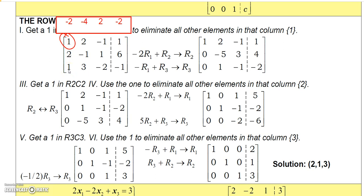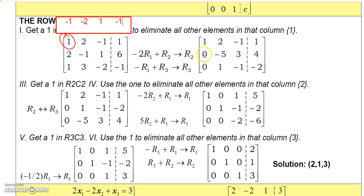Now I also have to get rid of the 1 in row 3. I'll multiply row 1 by negative 1 and add it to row 3. Multiplying row 1 by negative 1 gives: negative 1, negative 2, positive 1, negative 1. Adding to row 3: negative 1 plus 1 is 0, negative 2 plus 3 is 1, 1 plus negative 2 is negative 1, and negative 1 plus negative 1 is negative 2. Now I have the 1 in the pivot and zeros in the rest of that column.